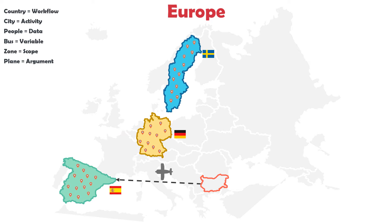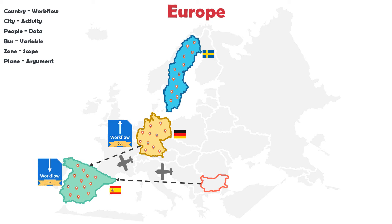Let's see the next direction: Out. Assume Germany is a workflow and Spain is a workflow, and people want to travel from Germany to Spain. Europe is the main workflow and we invoke both workflows there. The plane flies out from Germany and arrives in Spain. For Germany the direction is Out, because the plane has flown from this country. And for Spain the direction is In, because the plane arrives into this country.